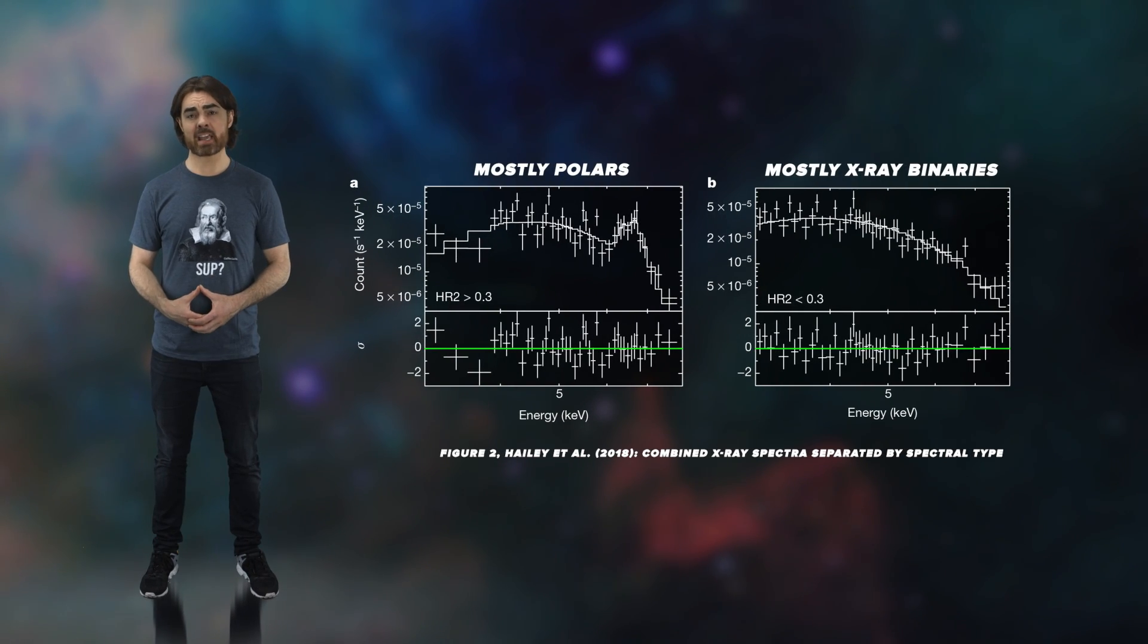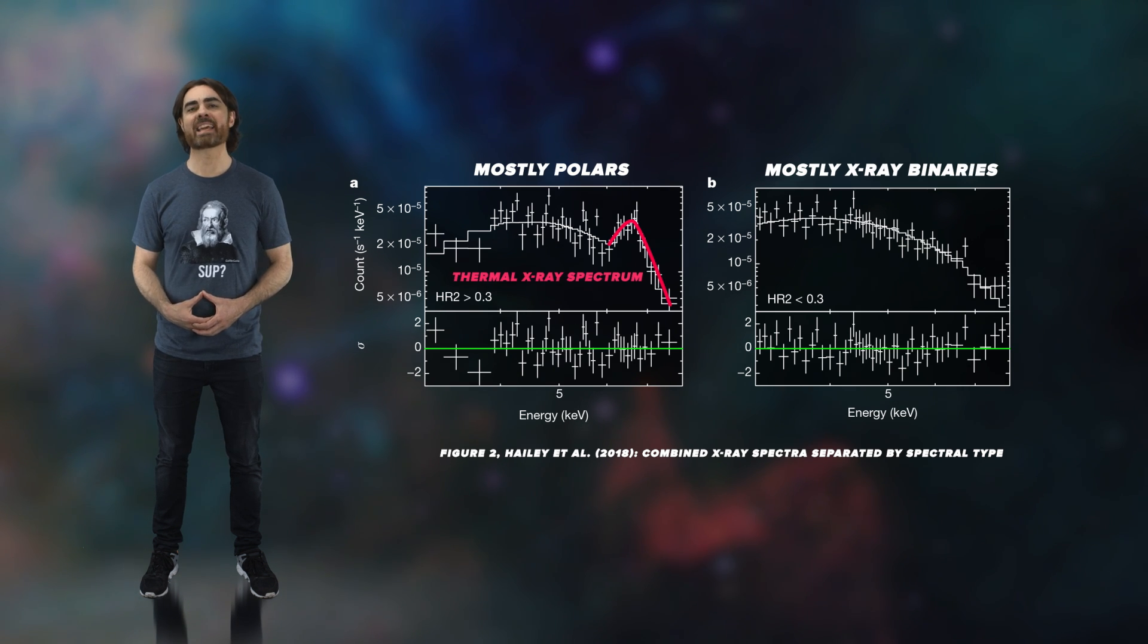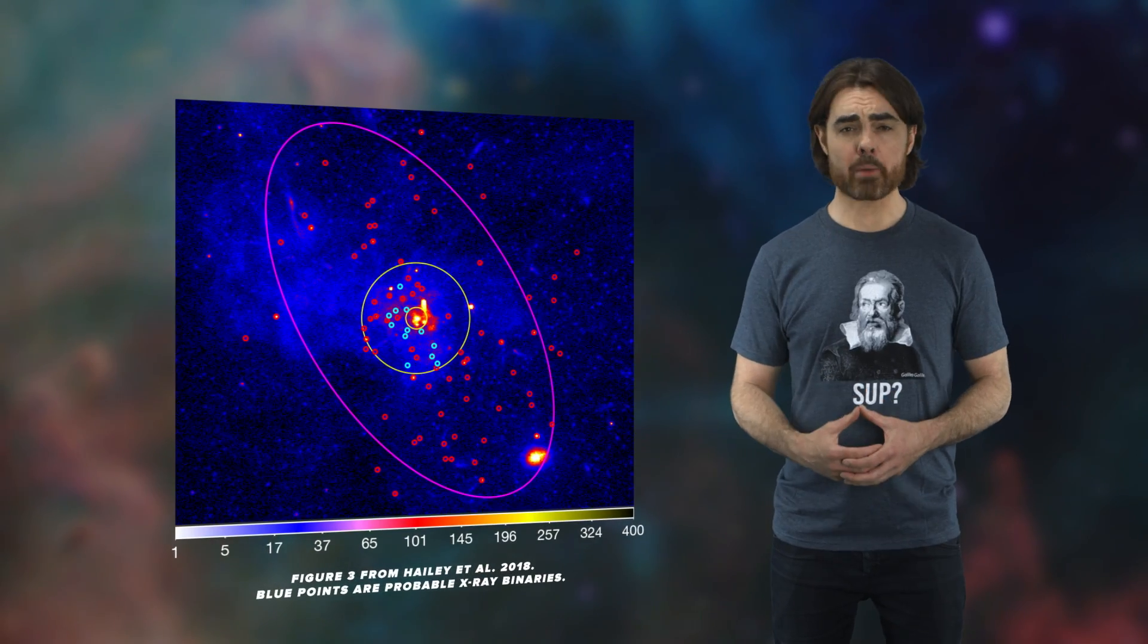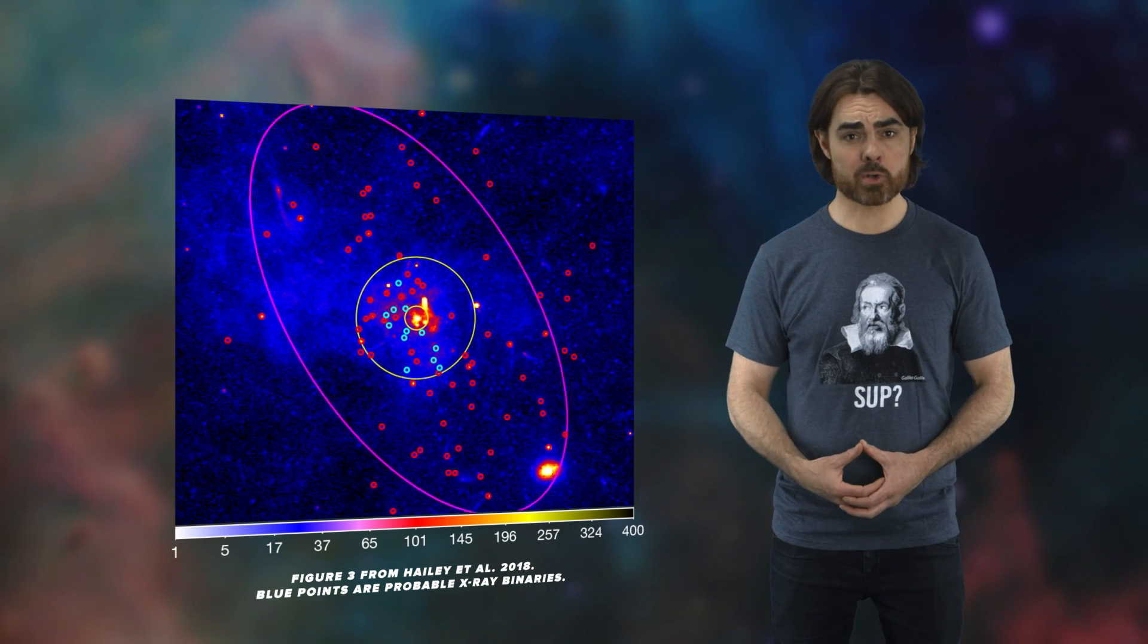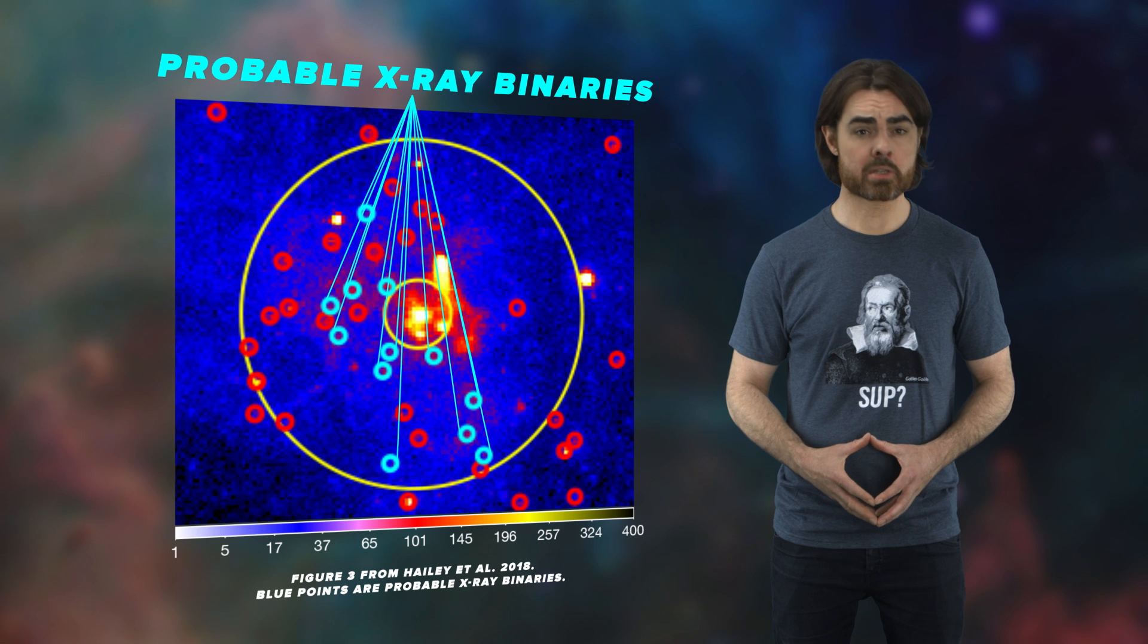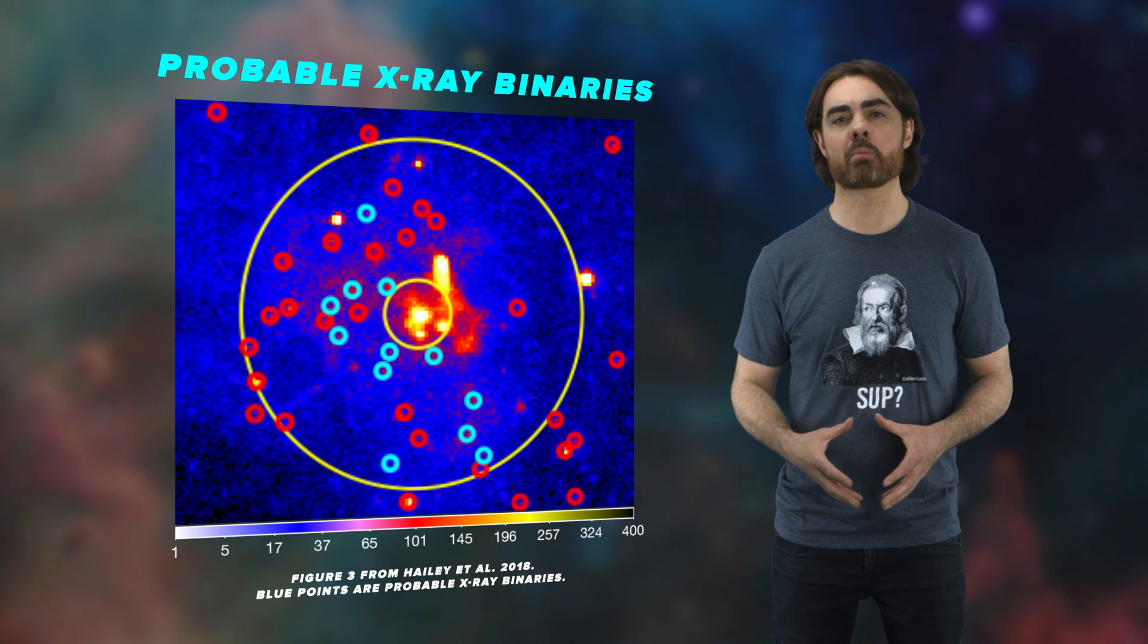But these polars produce a very different spectrum to x-ray binaries. Polars only glow at a single extremely high temperature, while x-ray binaries glow at both high and low energies due to the large temperature range of the accretion disk. That allowed the researchers to weed out the x-ray sources that had the wrong spectra. After weeding out polars and other uninteresting sources, there remained 13 probable quiescent x-ray binaries, which appeared to be the type powered by black holes.